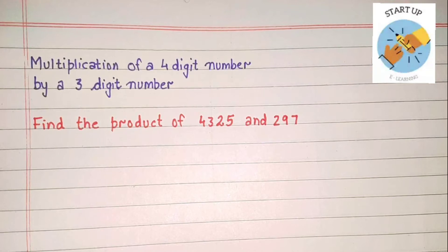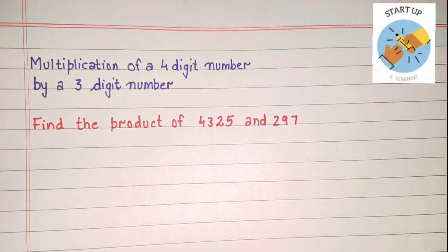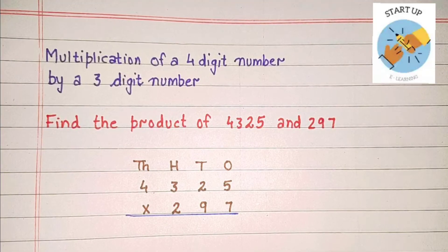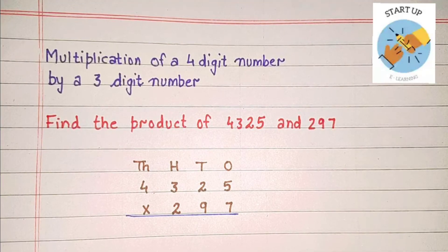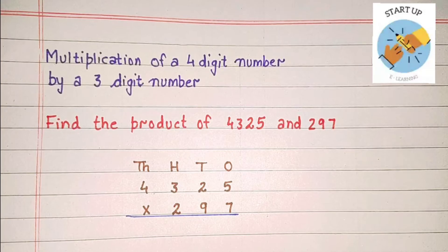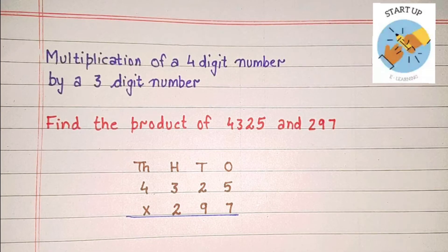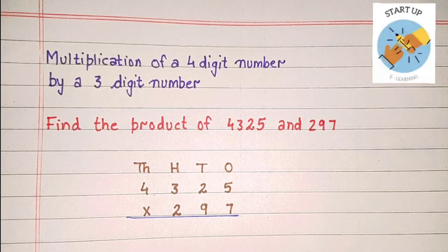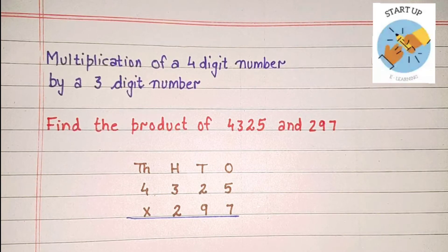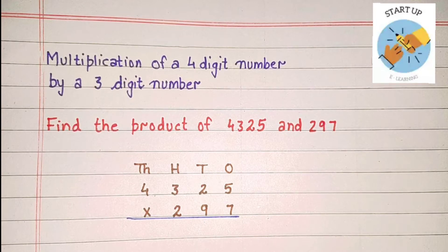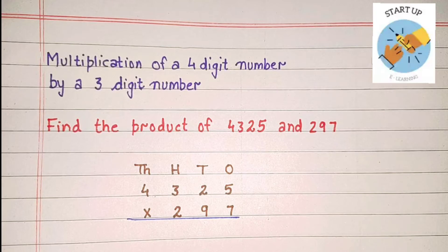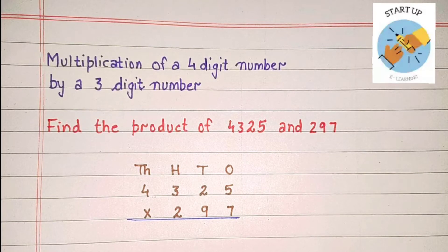Before solving the sum, we need to arrange these numbers according to their places. Five will be written under ones place, two under tens place, three under hundreds place, and four under thousands place. As 297 has three digits, seven will be written under ones place, nine under tens place, and two under hundreds place.